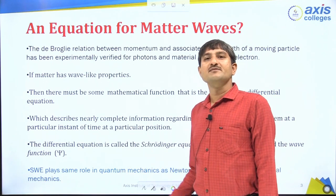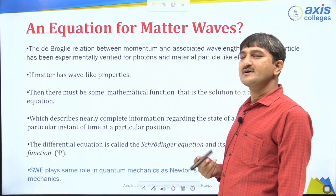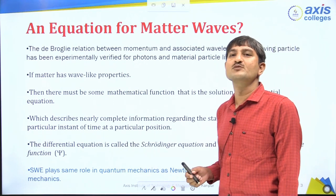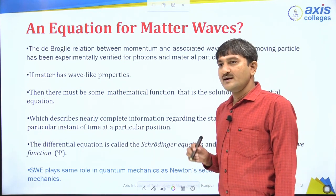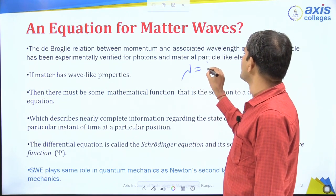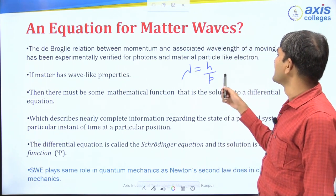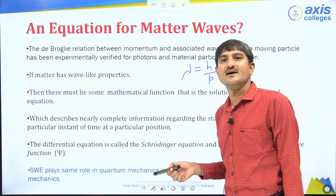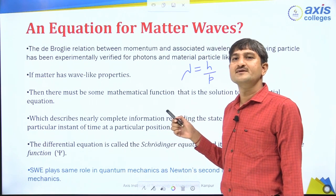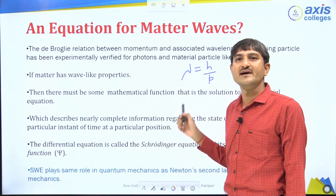As we have already discussed in the previous lecture, according to de Broglie, if a particle is moving, then there is an associated wave with the moving particle. De Broglie gave the relation λ = h/p. This relation is correct for any material particle as well as the photon. If you are finding any difficulty, refer to our previous lecture on de Broglie wavelength or matter waves.